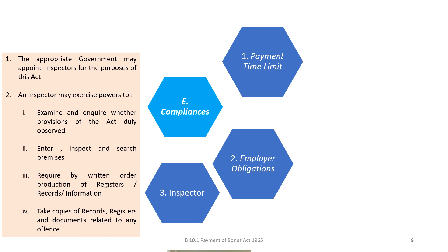For compliance purposes there is an inspector, whose functions and rights are almost similar to the inspector under the Factories Act who also covers payment of wages and minimum wages. His powers include the right to inspect, demand information, call for records, take copies, hear parties, summon them, and come to a conclusion as to whether compliances are in order or there is an issue of non-compliance.